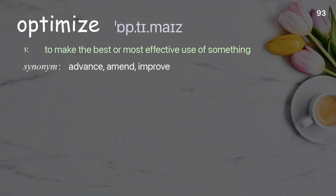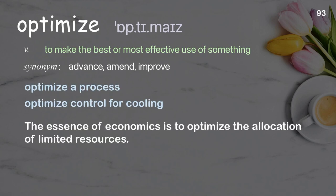Optimize: to make the best or most effective use of something. Examples: optimize a process; optimize control for cooling. The essence of economics is to optimize the allocation of limited resources.